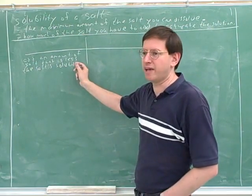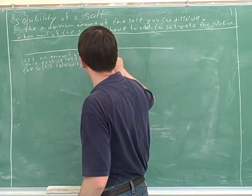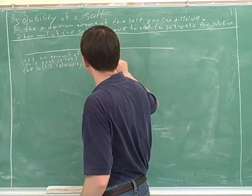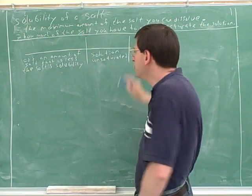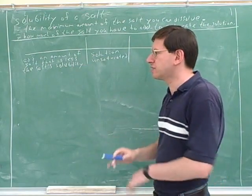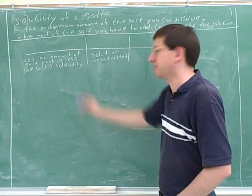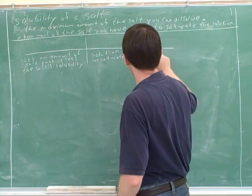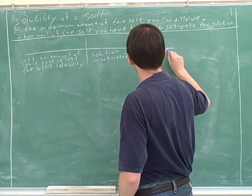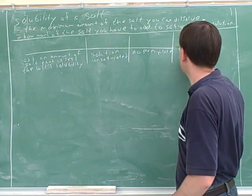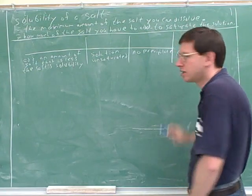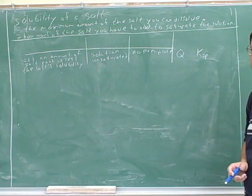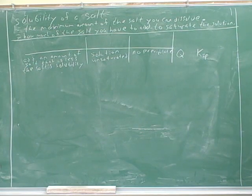It's still unsaturated, because we haven't added enough. So the solution would be unsaturated even after this portion dissolves. And there would be no precipitate, because it's going to completely dissolve. What's the relationship between Q and Ksp? Q is going to be less than Ksp — that's a good answer.